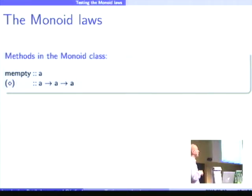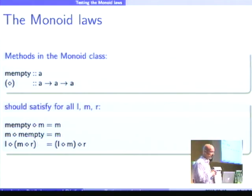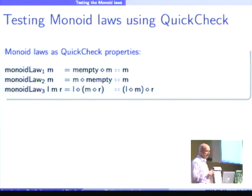So, if you look at the Monoid class, you have two methods. The mempty and the mappend, which takes two monoid values. And the package says that these methods should satisfy mempty is the unit of mappend, and mappend is associative.